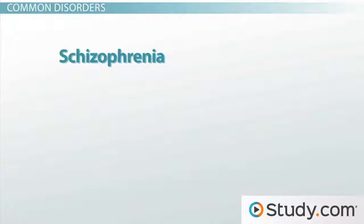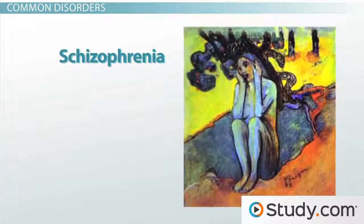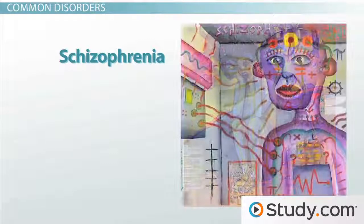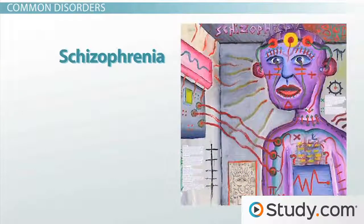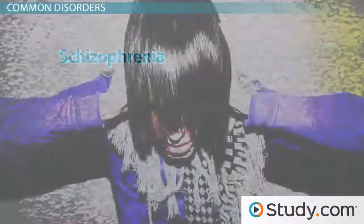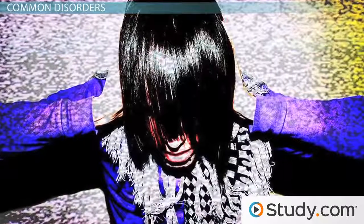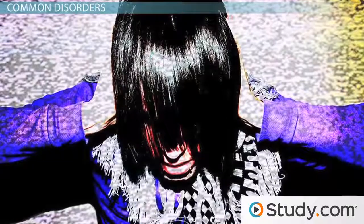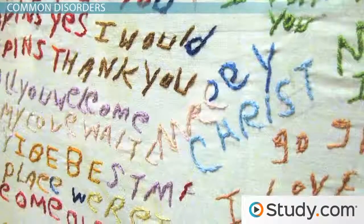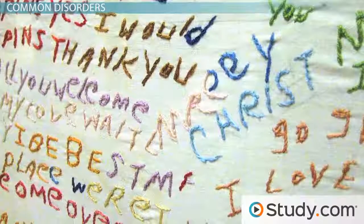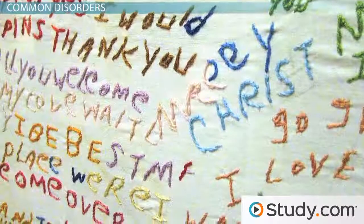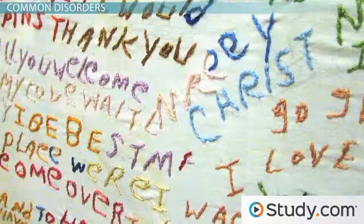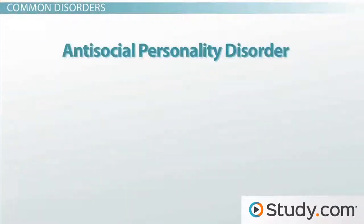Schizophrenia is a mental illness that makes it difficult for the sufferer to tell the difference between reality and hallucinations. Schizophrenic patients often have vivid hallucinations, especially auditory hallucinations like hearing voices. The symptoms of schizophrenia may be a result of too much of the neurotransmitter dopamine in the brain. Schizophrenics can be treated with medication, but it is sometimes difficult to get them to keep taking their medication.